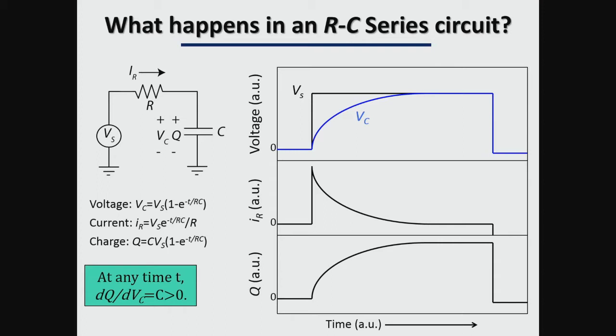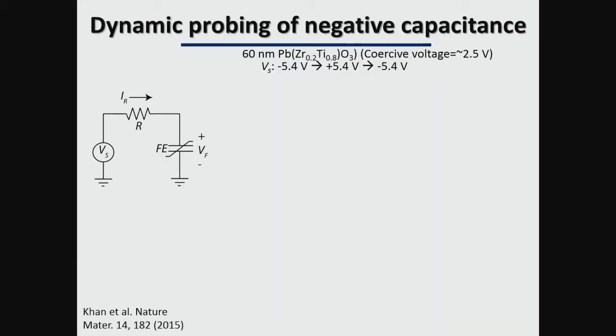We took the ferroelectric material, connected it in series with a voltage source through an external resistor, applied a voltage pulse, and measured the voltage across the ferroelectric and the applied voltage using an oscilloscope. For basic understanding: in a regular RC circuit, applying a voltage across a series resistor-capacitor combination causes the voltage and charge across the capacitor to increase with time constant RC. At any time step, the change in charge and change in voltage have the same sign, and their ratio dQ/dV_C gives a positive capacitance.